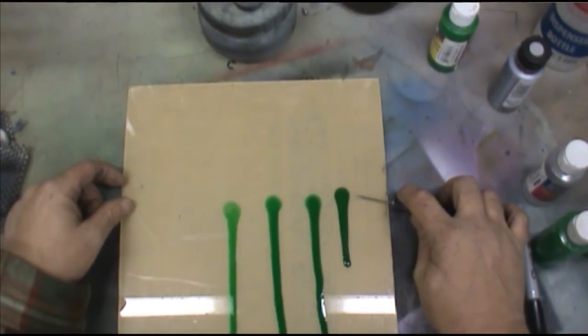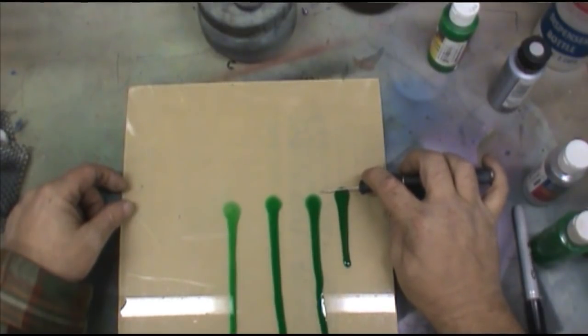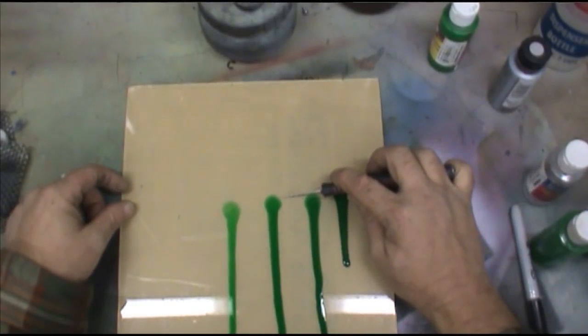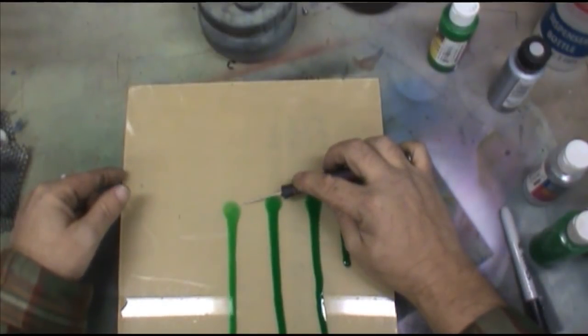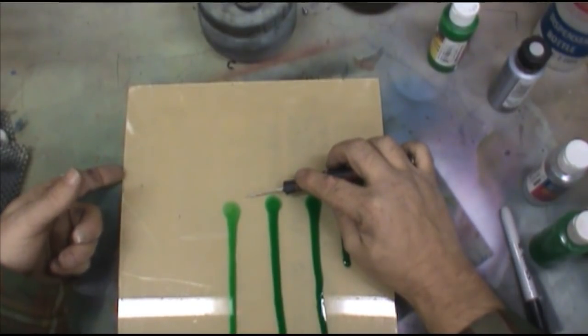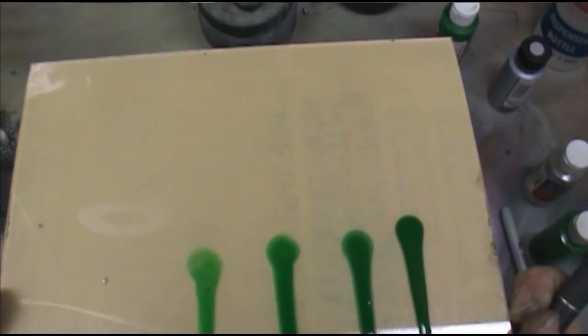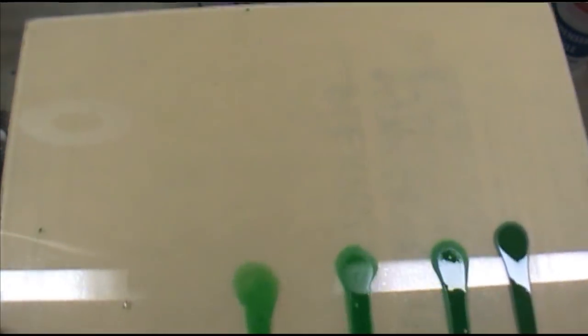Again, no thinner. This one here is probably about three parts paint to one part reducer. This is real close to one to one, maybe three parts paint, two parts thinner. And this one over here is two parts paint to, or excuse me, one part paint to about two parts, maybe even three parts thinner. And you can really see the difference in the color separation in them now.